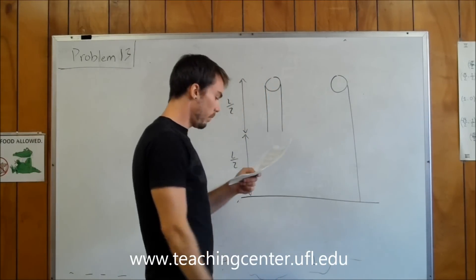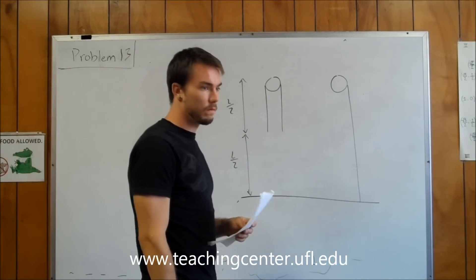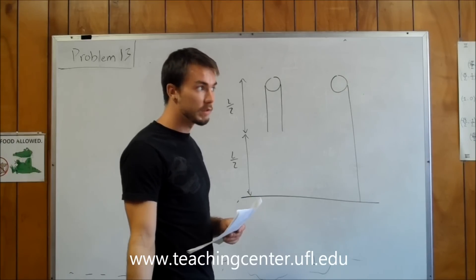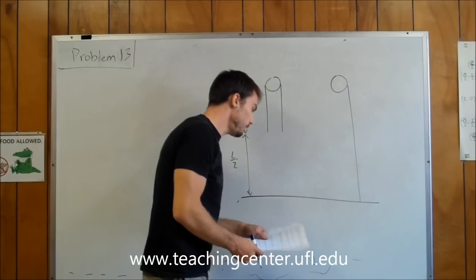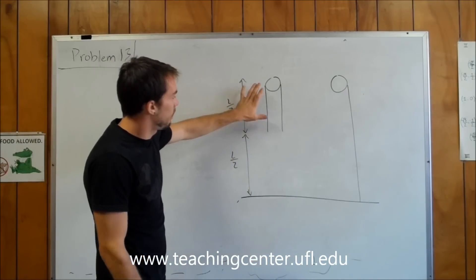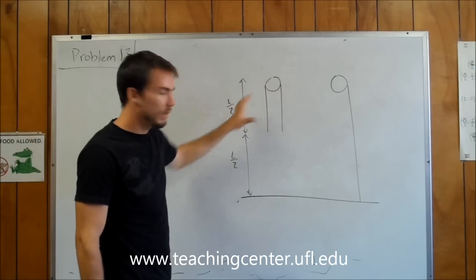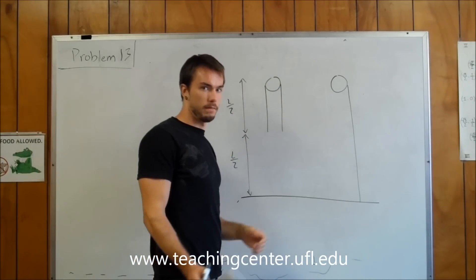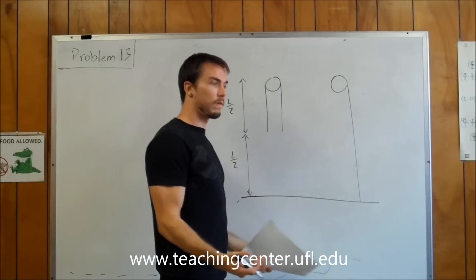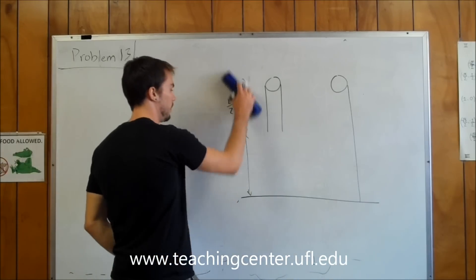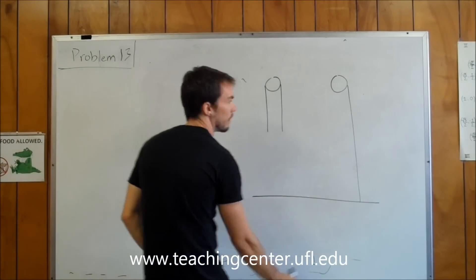So what we can do is, anytime you have something falling and you want to find a velocity, a good approach is to use energy. What I'm going to do is look at this and say this is basically kind of like having two different ropes hanging that are attached together. Both of them start with no velocity, so they both have potential energy.